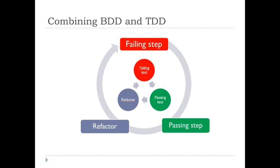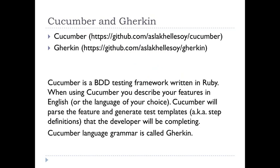So you have an outer level where you work with features, and an inner level where you work with traditional TDD. To do this we'll use Gherkin, which is a subset of natural language. It used to be part of Cucumber — a framework in Ruby — but now it's a separate project, brought to almost every mainstream language. You can use Gherkin in Visual Studio; we'll be doing it using SpecFlow, a Visual Studio add-on.